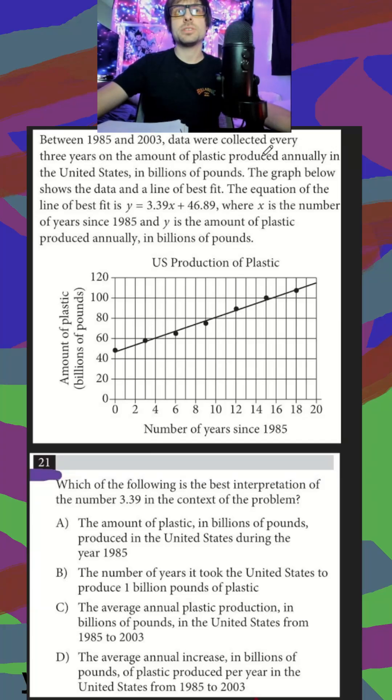Between these years, data was collected every three years on the amount of plastic produced annually in the U.S. in billions of pounds. The graph below shows the line of best fit. The equation of the line is y = 3.39x + 46.89, where x is years since 1985, that's going to be like our y-intercept, our start, and y is the amount of plastic produced annually.